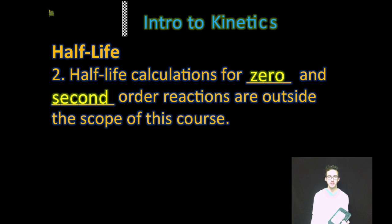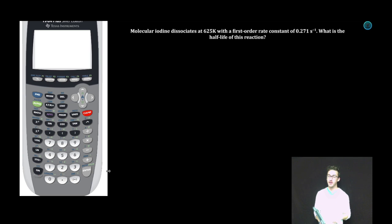Again, the calculations here for first-order reactions are pretty straightforward and fairly easy. And it's important to remember that for this course, and for the AP test, half-life calculations for zero and second-order reactions aren't gonna be considered. Woo! All right, let's take a look at a couple of quick examples to solidify this idea of half-life.